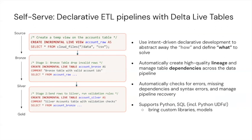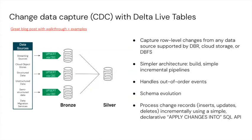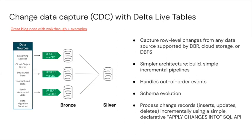Here's a brief example of how DLT might work. That very first example uses Autoloader — it's selecting star from cloud files, grabbing data from a certain directory as a CSV. That creates an Autoloader instance in the background which ingests those files and brings them into the Delta table. With DLT you can use both SQL or Python. You can also facilitate CDC with both Autoloader and Delta Live Tables. Data quality is outside our scope today — that would be for a larger DLT demo.